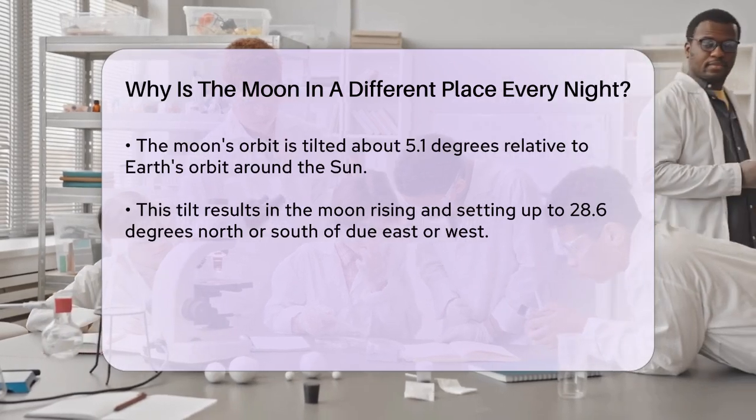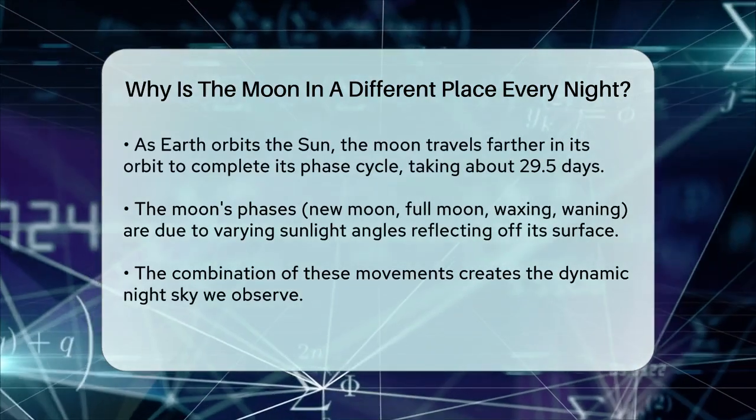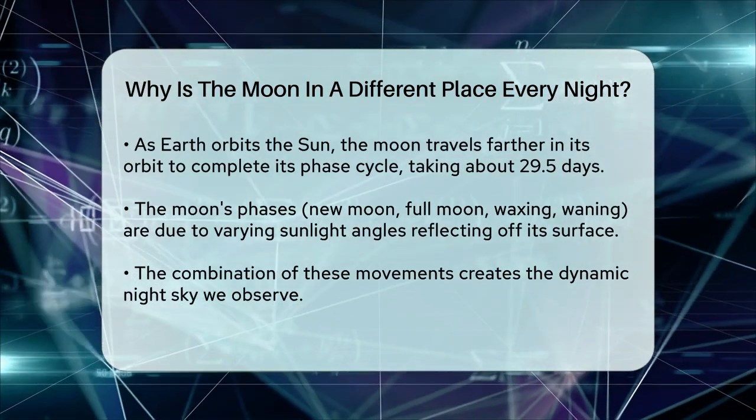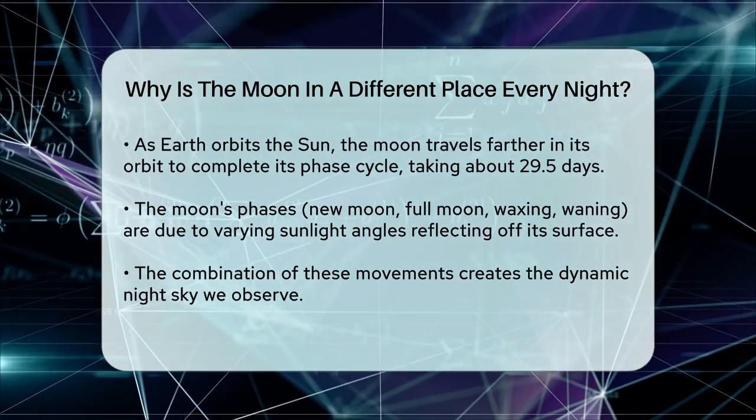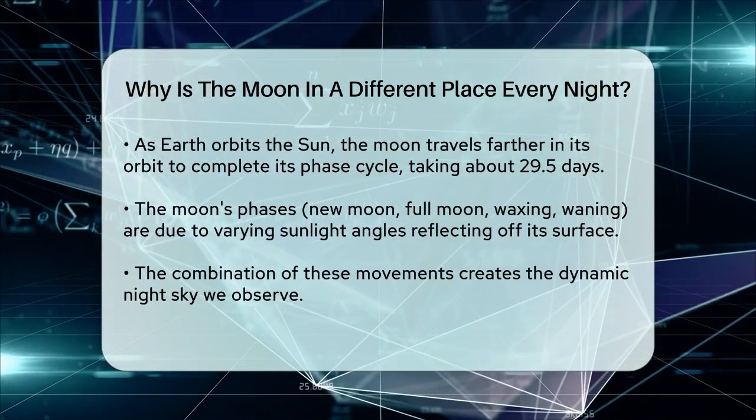Additionally, the Moon's phases are a result of the changing amount of sunlight that reflects off its surface as it orbits the Earth. The phases, such as new Moon, full Moon, waxing, and waning, are all due to the different angles at which the Sun's light hits the Moon's surface from our perspective on Earth.